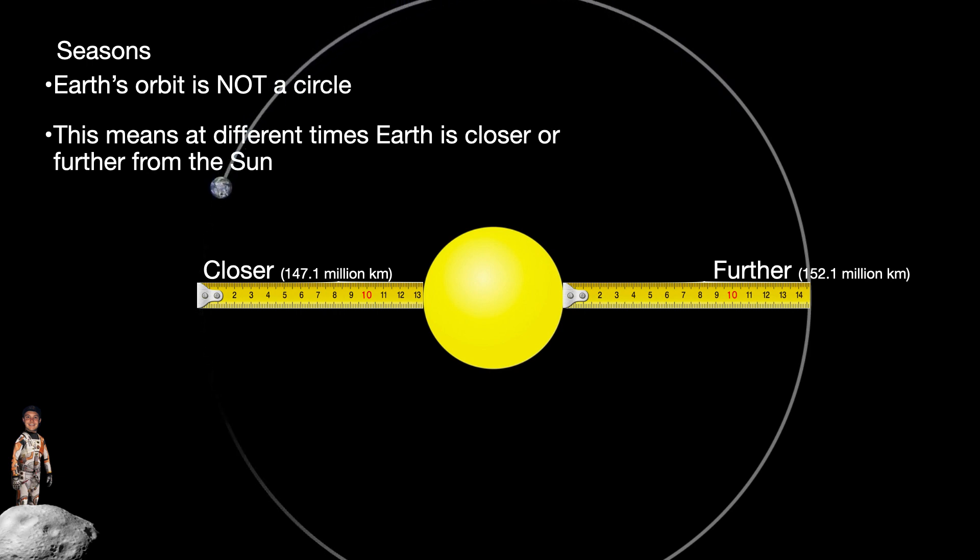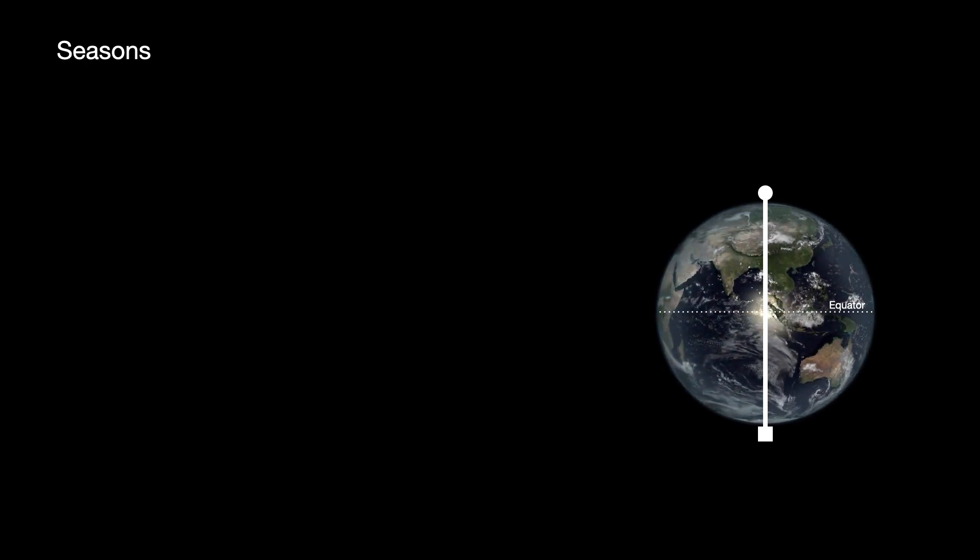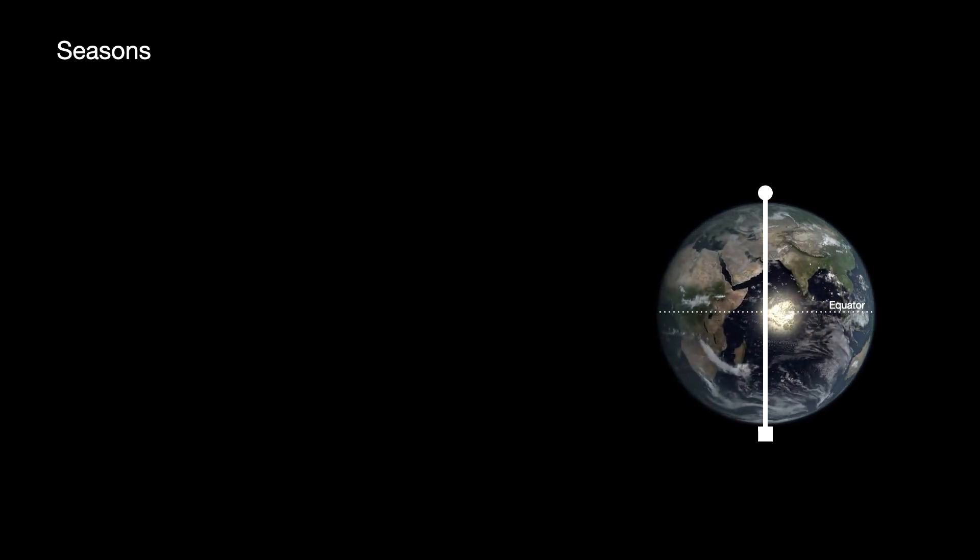Now the interesting part about this is it is not what creates the seasons on Earth, because we are actually closer to the sun in January, and furthest from the sun in July. So you might be thinking right now, well then why is it cold in the winter if we are so much closer to the sun at that time? Well as it turns out, there is a larger factor besides the distance from the sun that actually creates and controls our season.